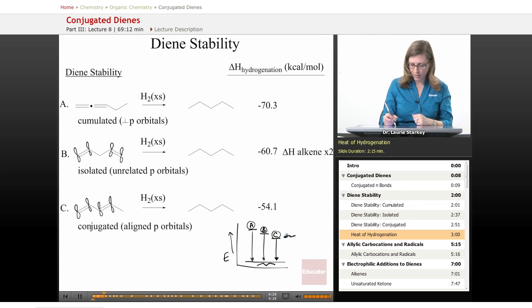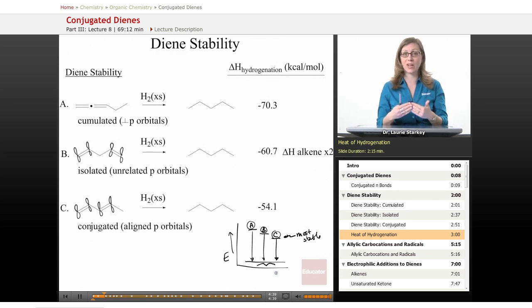C is the most stable diene because it has the smallest amount of energy to release upon hydrogenation. And it's because of this resonance - we call this resonance energy, the energy that we get from that stabilization.